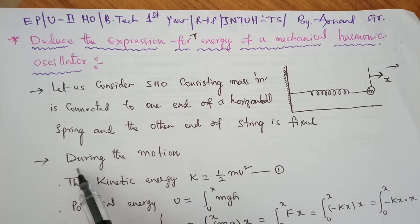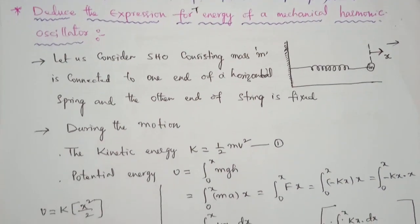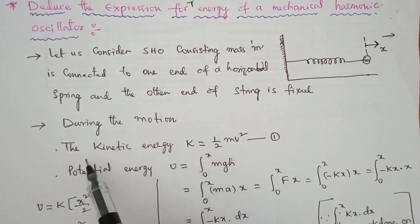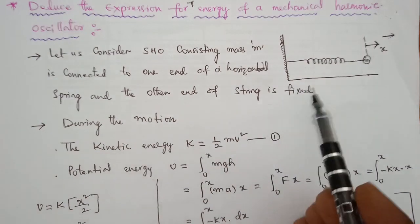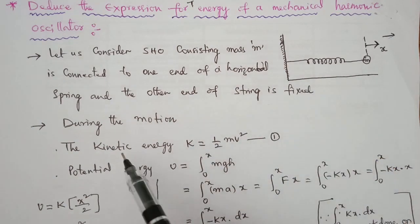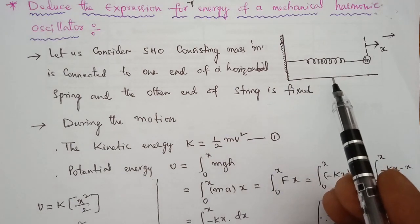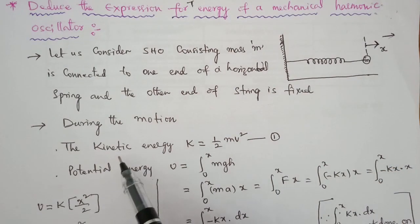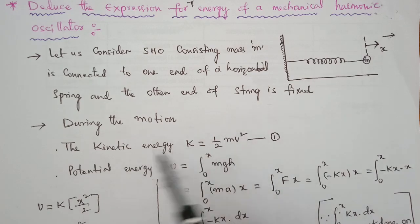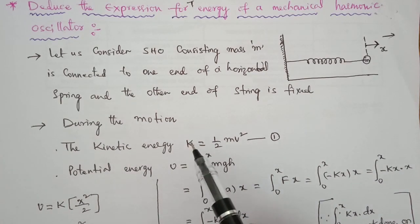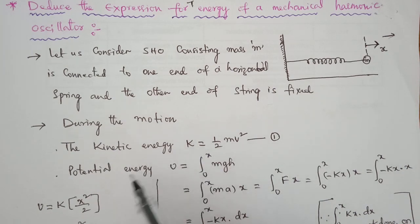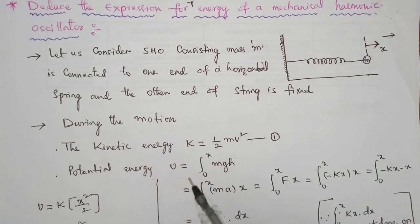During this motion, the spring can possess kinetic energy and also potential energy. The energy possessed by a moving particle or moving object is known as kinetic energy. The energy possessed by virtue of its position is known as potential energy.